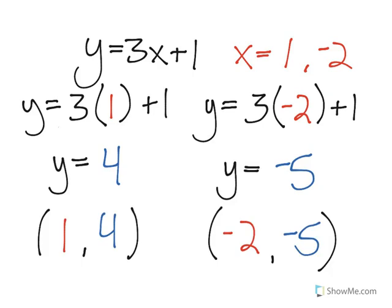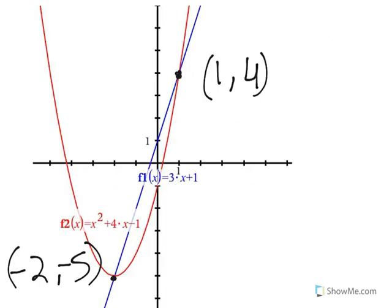So the ordered pair solutions of the two equations are 1, 4, and negative 2, negative 5. The solutions are also where the graphs of the two equations intersect. So here we have negative 2, 5, and here we have 1, 4.